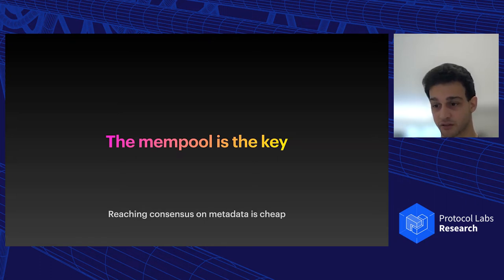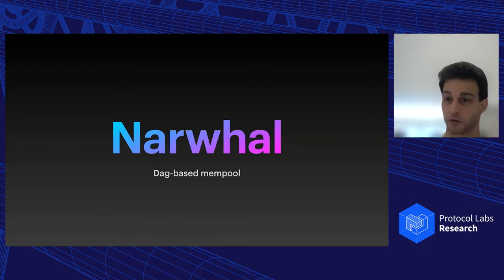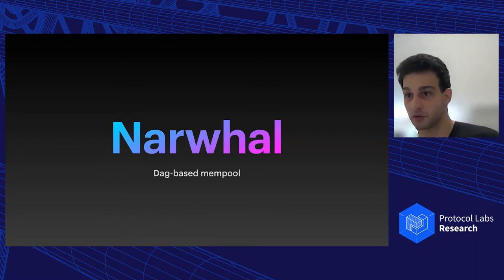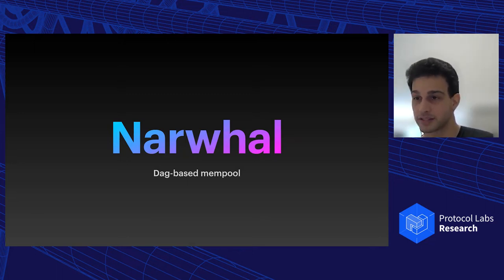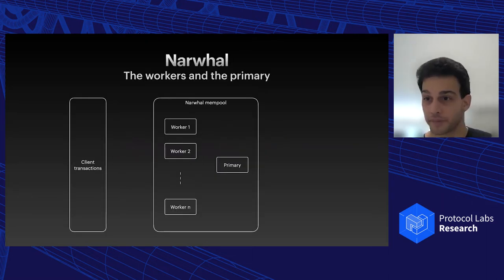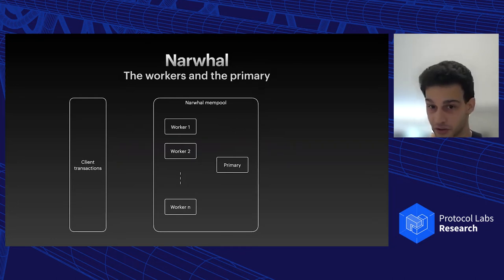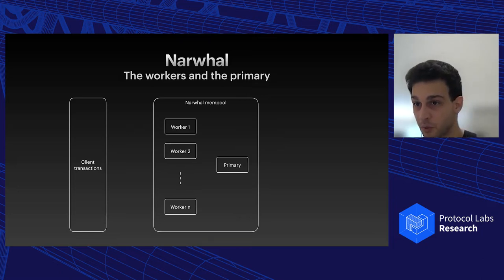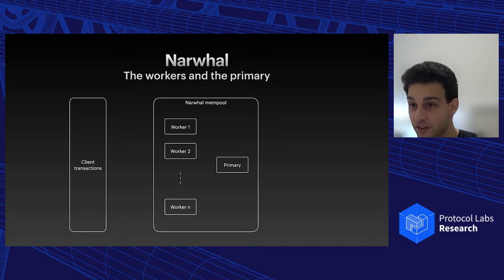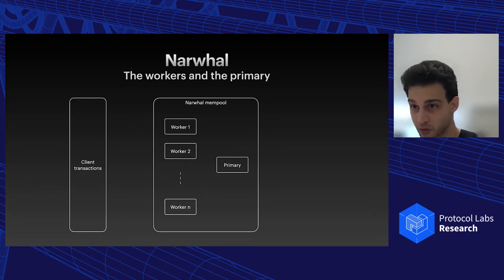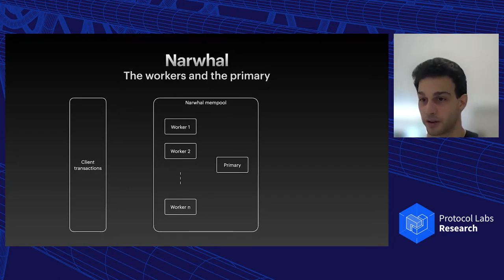This is about separating data propagation — the role of the mempool — from reaching consensus on metadata — the role of the consensus protocol. The Narwhal mempool runs on every single node and is composed of workers and one primary per node. Don't look too much for the trust relationship between workers and the primary; simply assume each worker is a process on the same machine as the primary — a single trust authority operating a single node.